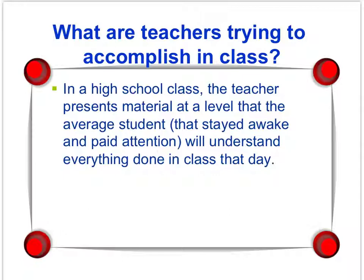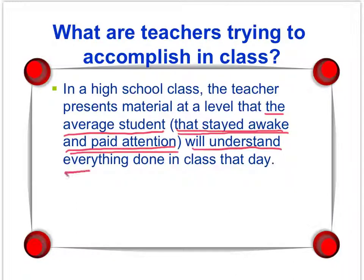So given that we're different, what are we trying to accomplish in class? Part of this has to do with the way we are assessed and accredited. In a high school class, the teacher tends to present the material so that the average student who stayed awake and paid attention will understand everything done in class that day. We can't account for the ones who went to sleep — they're lost. A high school teacher's goal is that everyone who paid attention for that 45 to 57 minutes should leave knowing what was covered that day.